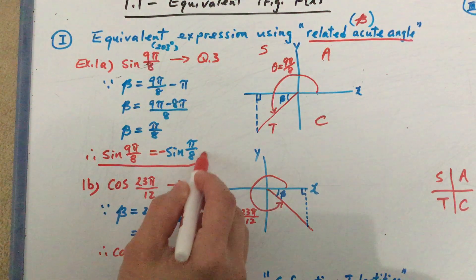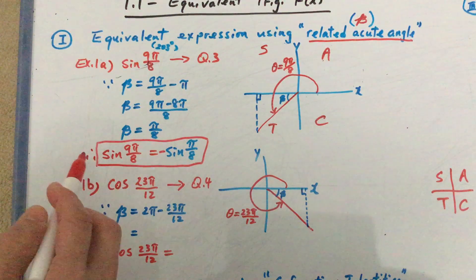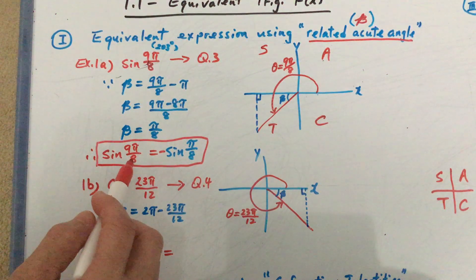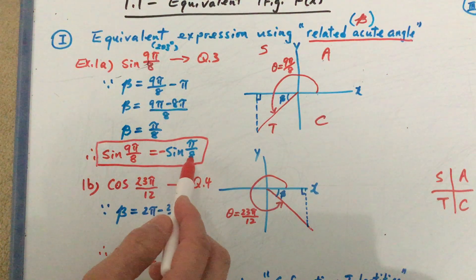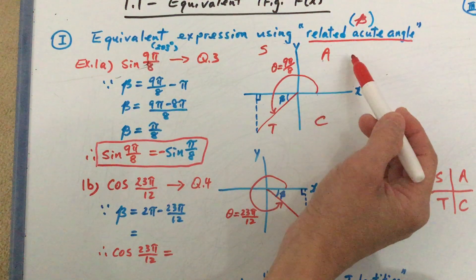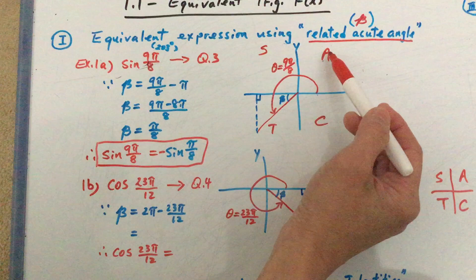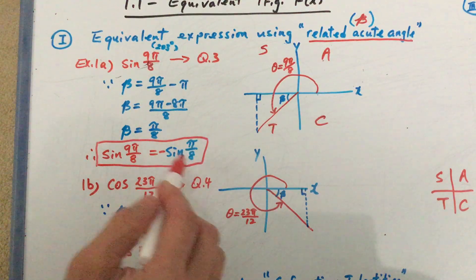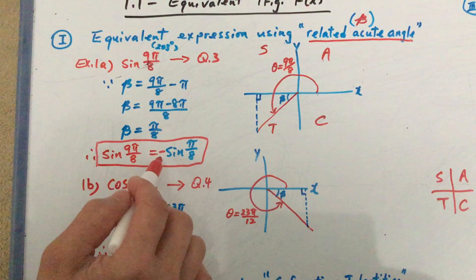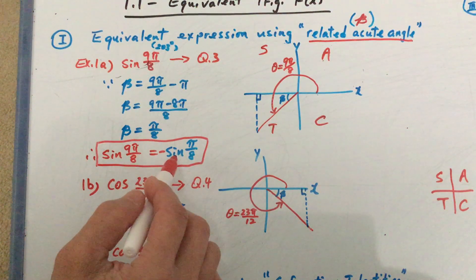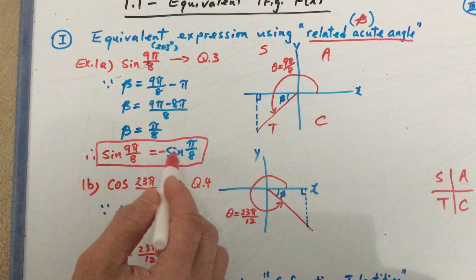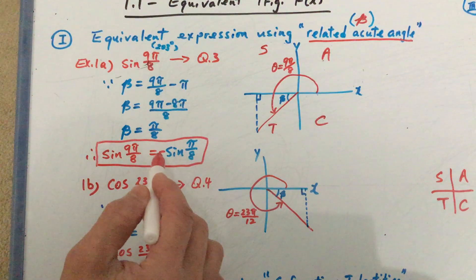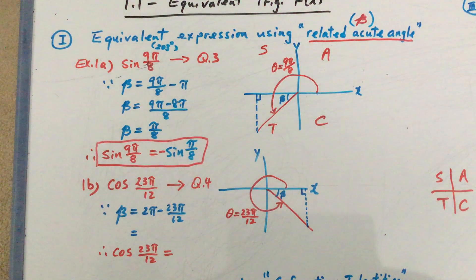If you punch in sine of 9π over 8 from your calculator, you're going to get a negative ratio. But if you only punch in sine of pi over 8, pi over 8 is an angle in quadrant 1, and everything in quadrant 1 is positive. So the only difference between sine pi over 8 and sine 9π over 8 is the negative sign. If I want to use the related acute angle to represent this principal angle, I must include the negative there.